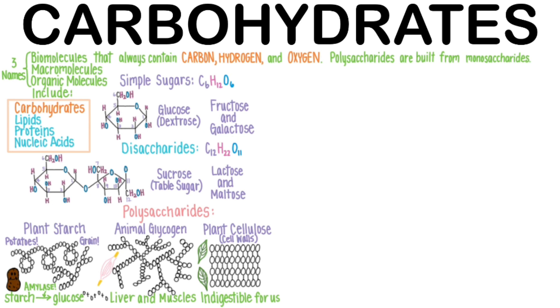Cellulose provides us, as humans, with insoluble dietary fiber. Other indigestible fiber parts of a plant that are more soluble in water include pectin and the gums of certain plants.